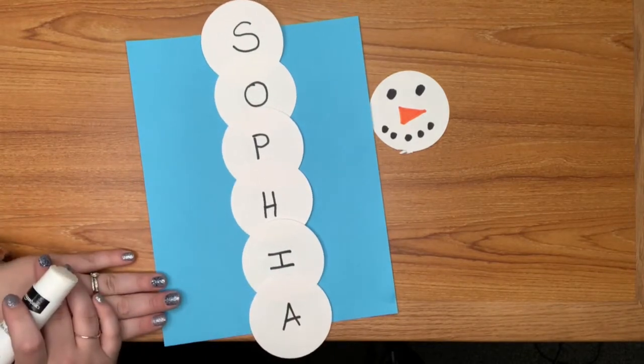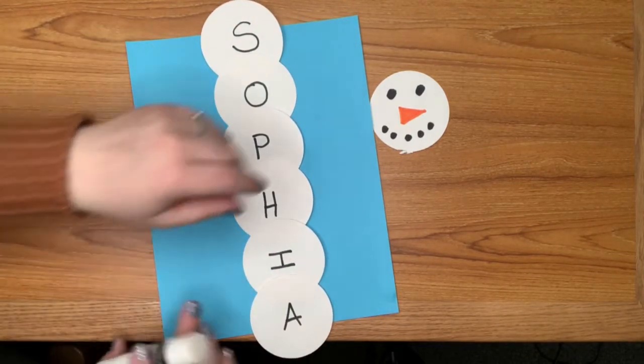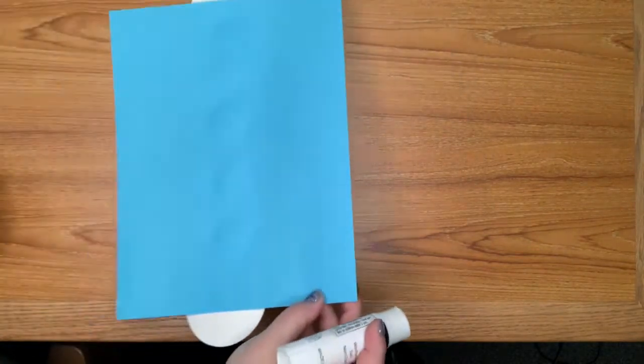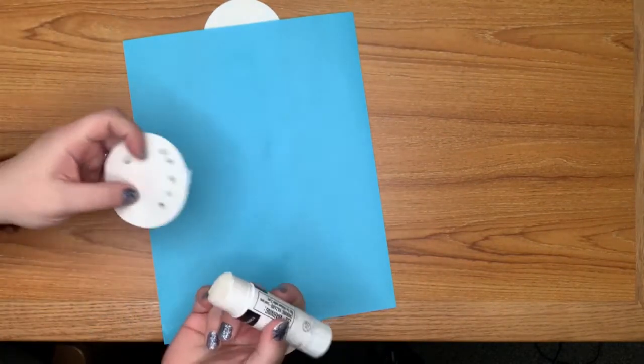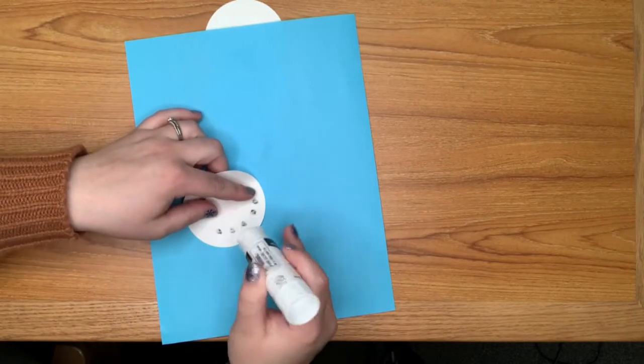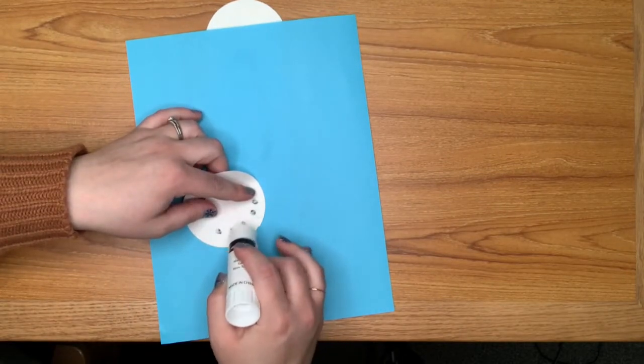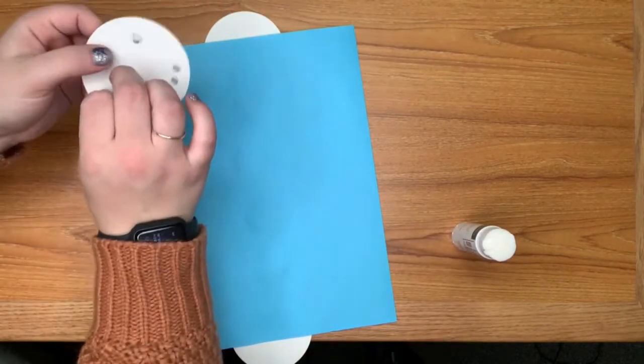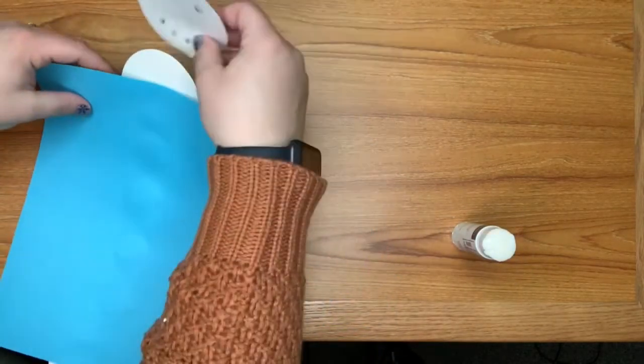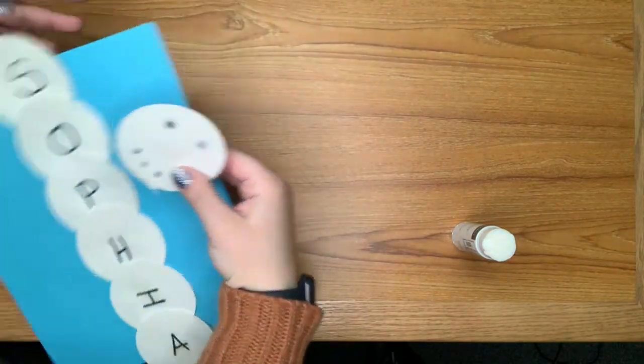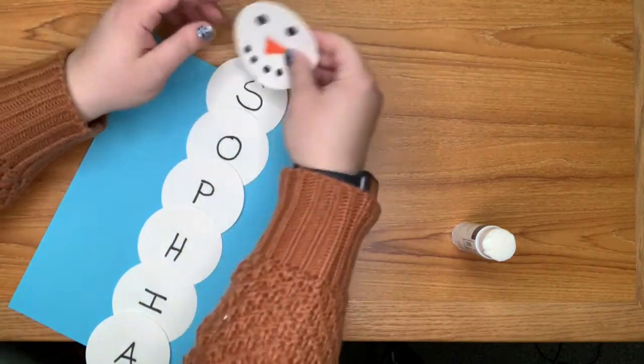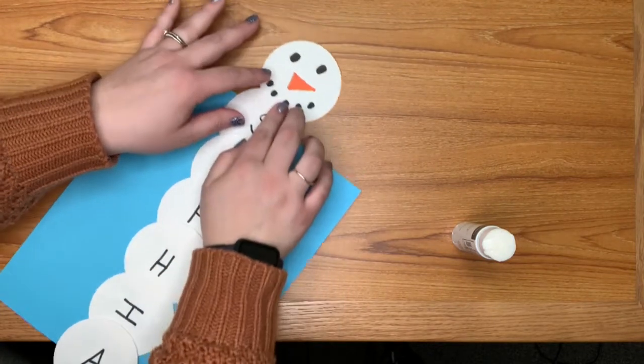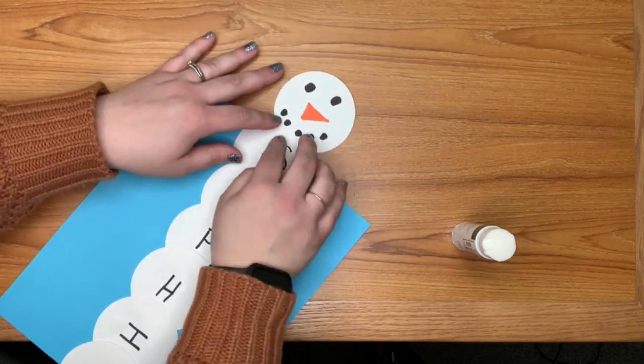All right, here's my name Sophia. So the next thing I'm going to do is I'm going to flip it over so that I can get my snowman's face at the top. So I'm putting a little bit of glue right at the bottom and then, oops put it on the wrong side, that's okay. And glue my snowman face right at the top.